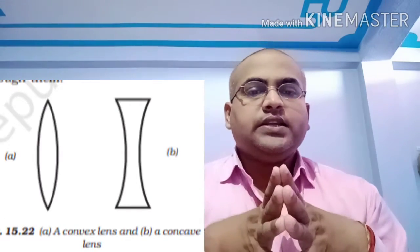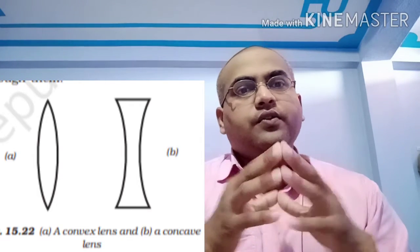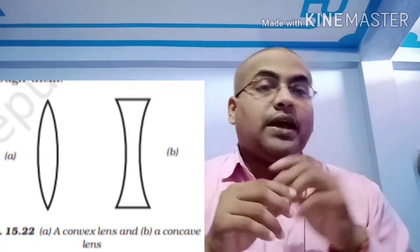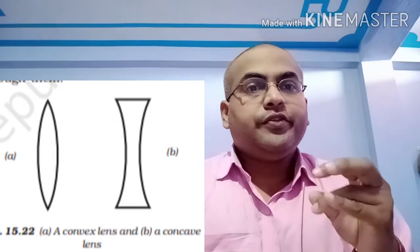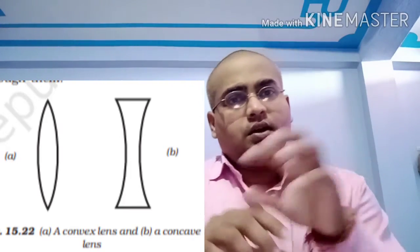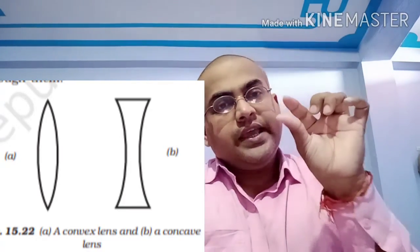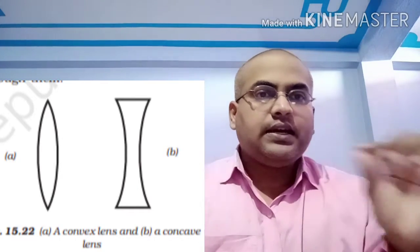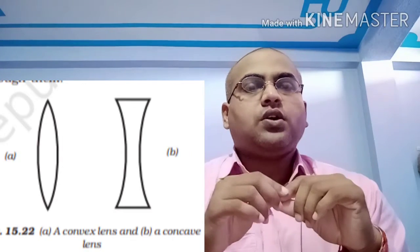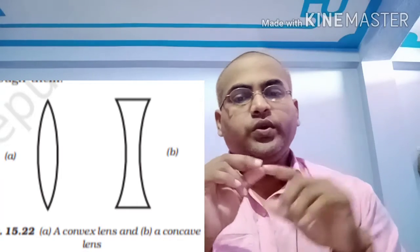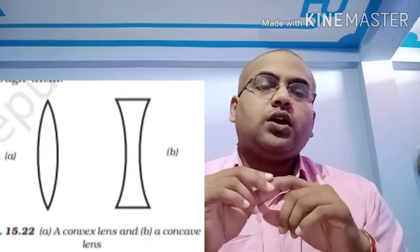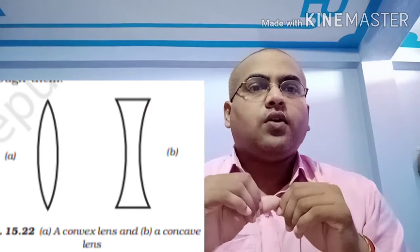Now we have to understand that these lenses are of two types. One is concave, one is convex. So the magnifying glass you are using, if you take out the glass from the set, you will find that this glass is in the middle a little thicker than the edges. The edges are thinner, but the middle portion is a little thicker. This type of lens, which have a center, in the middle, it is thick, is called convex lens.